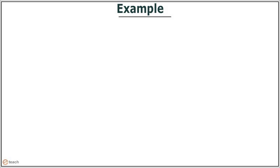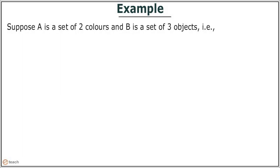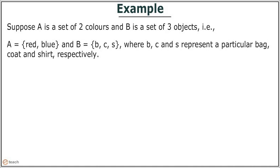Let us have an example. Suppose A is a set of two colors and B is a set of three objects. That is, A equals red comma blue, and B equals b comma c comma s, where b, c, and s represent a particular bag, coat, and shirt respectively.